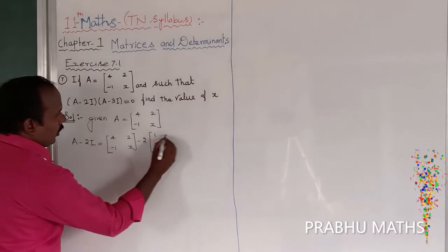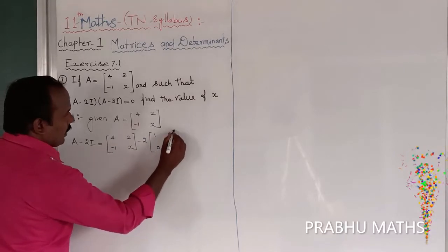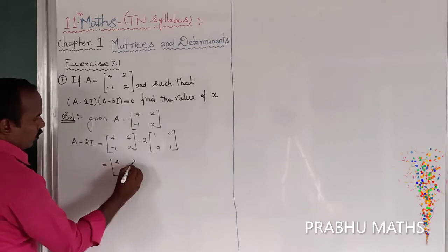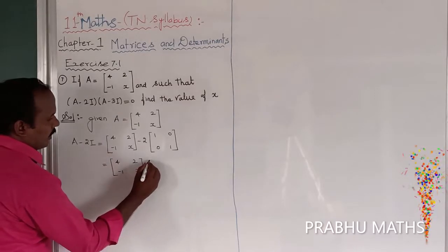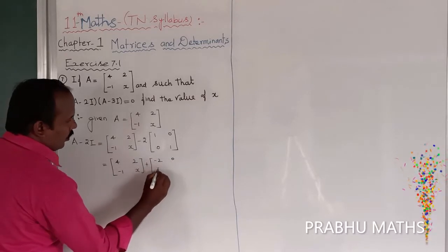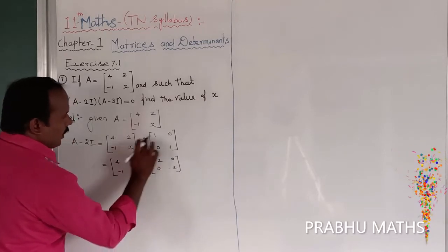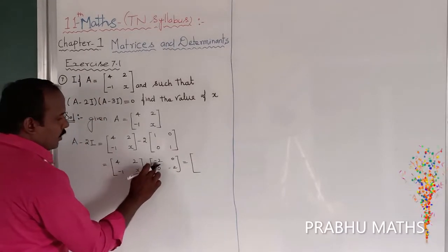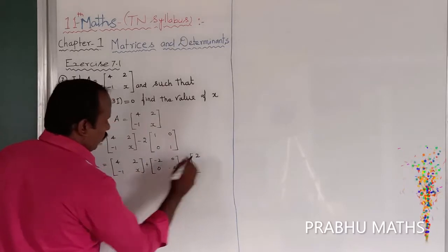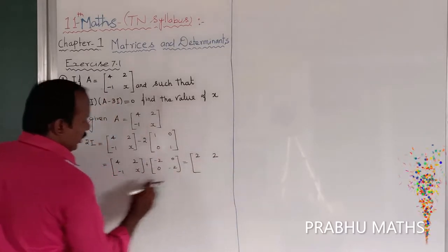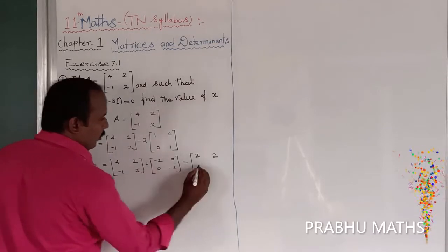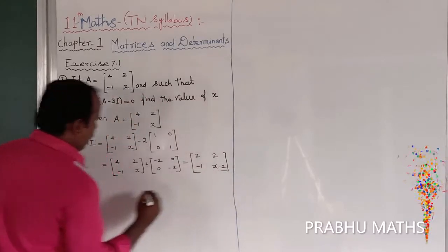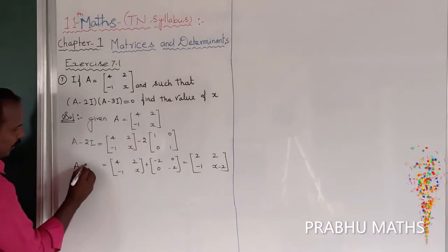So minus 2 into the identity matrix [1, 0; 0, 1]. So A minus 2I equals [4, 2; -1, x] minus [2, 0; 0, 2]. We get: 4 plus minus 2 equals 2; 2 plus 0 equals 2; minus 1 plus 0 equals minus 1; and x minus 2. So A minus 2I is completed as [2, 2; -1, x-2].